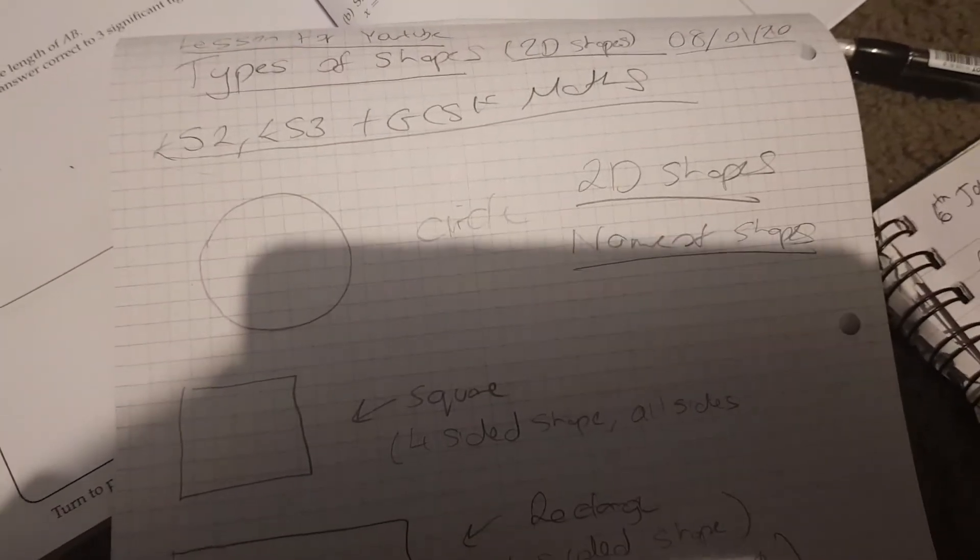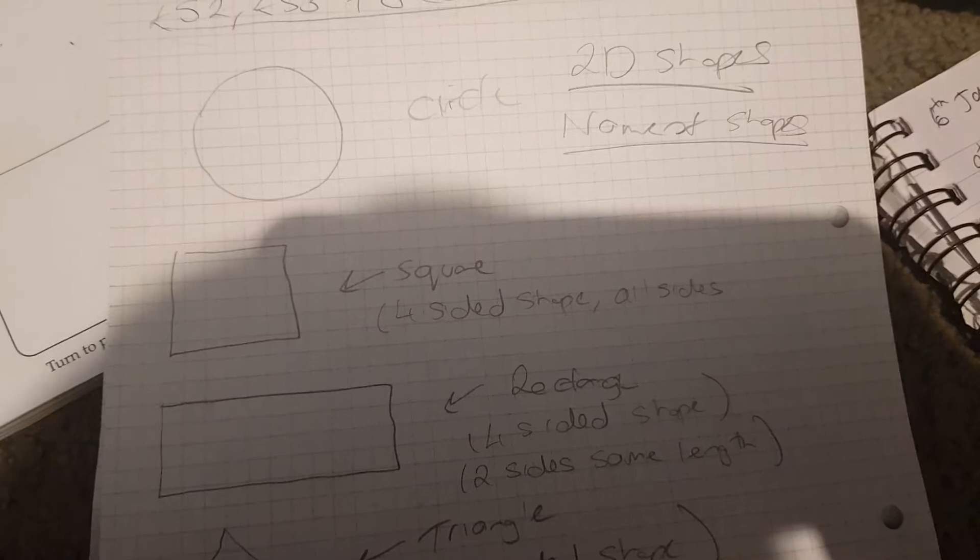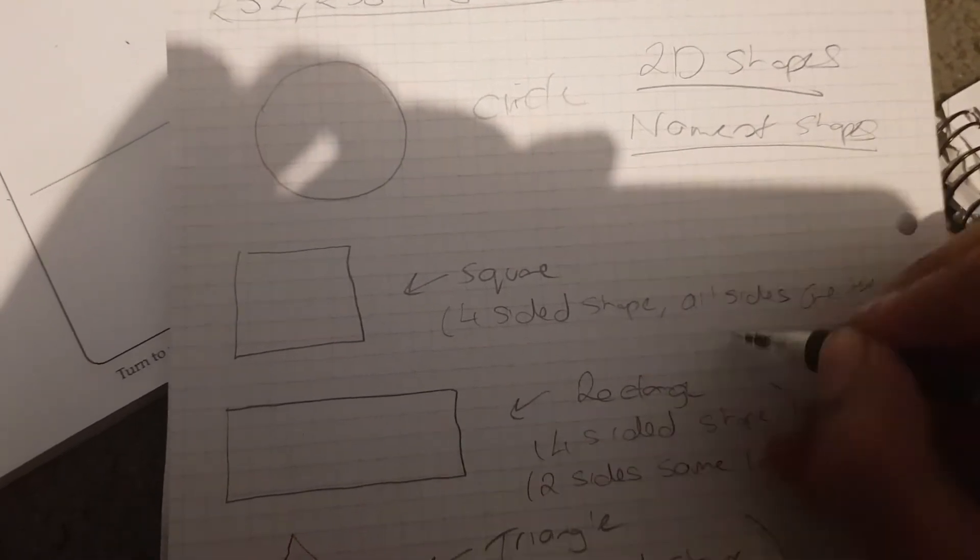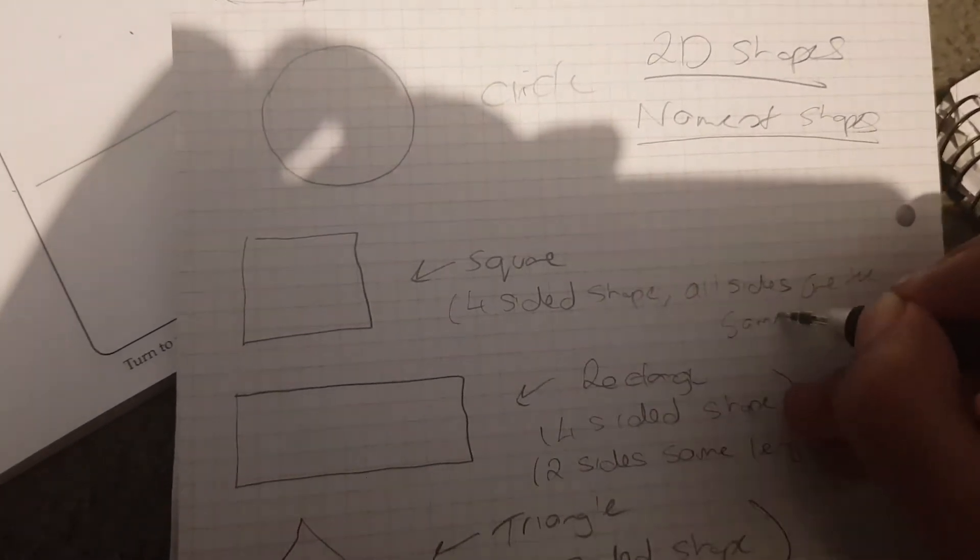So that's what I call a circle. That's a square, so a four-sided shape. It should actually say all sides are the same length.